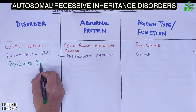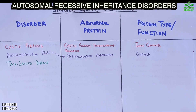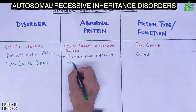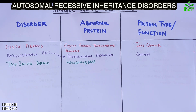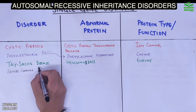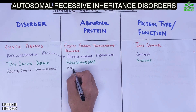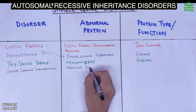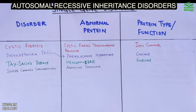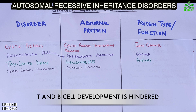Then we have Tay-Sachs disease, where there is destruction of nerve cells due to abnormal hexosaminidase protein. Next is severe combined immunodeficiency disease (SCID), where abnormal adenosine deaminase protein leads to disturbed development of functional T-cells and B-cells.